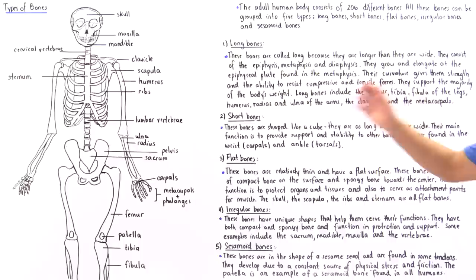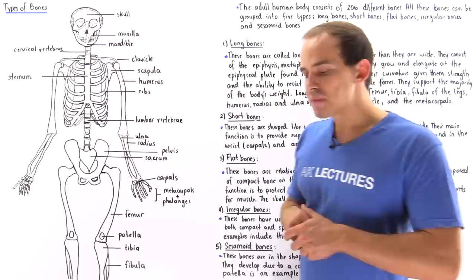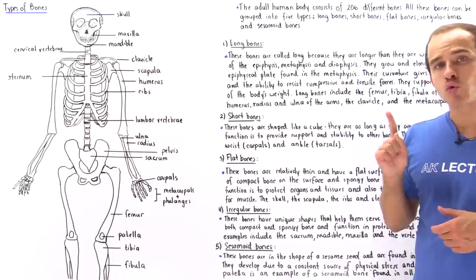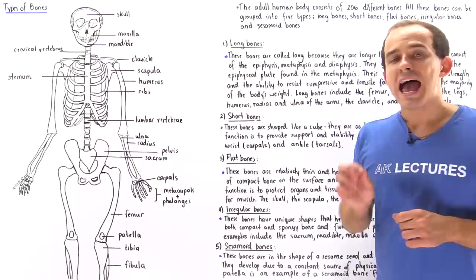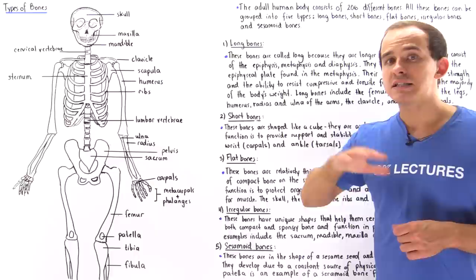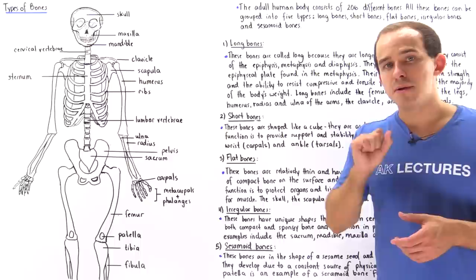Flat bones are those bones that are relatively thin and have a relatively high surface area. These bones serve two important functions: they can protect our internal organs and tissues, and they can serve as attachment points for muscles because of their high surface area. They contain compact bone on the surface and spongy bone at the center.